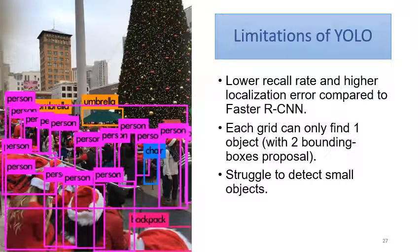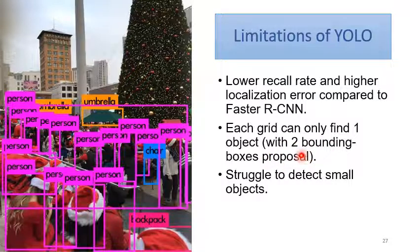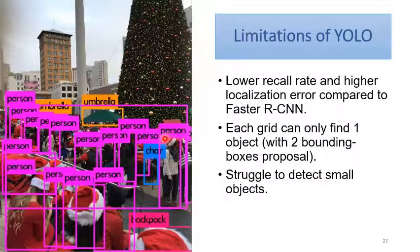There are still some limitations of YOLO v1. First, it has lower recall rate and higher localization error compared to Faster RCNN. Each grid can only detect one object. It struggles to detect small objects and overlapping objects due to the limits of bounding box proposals.